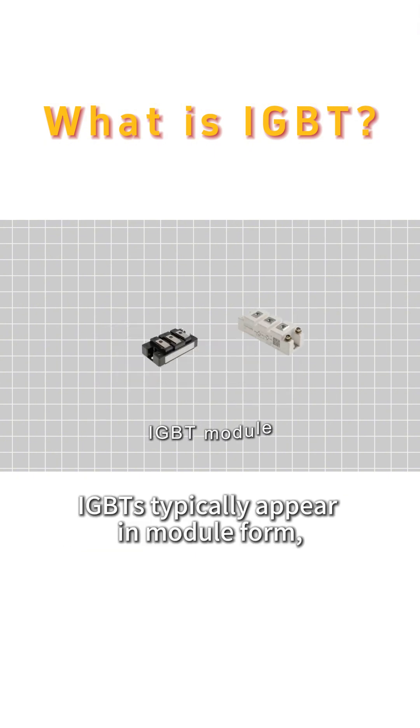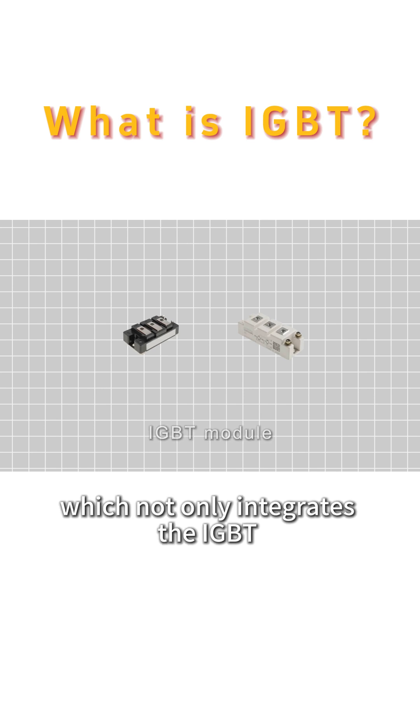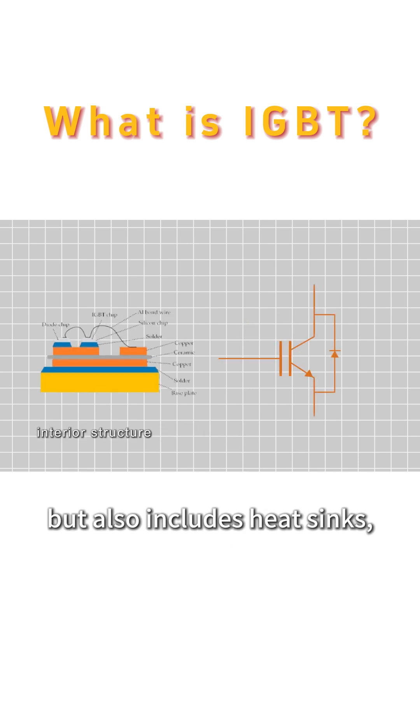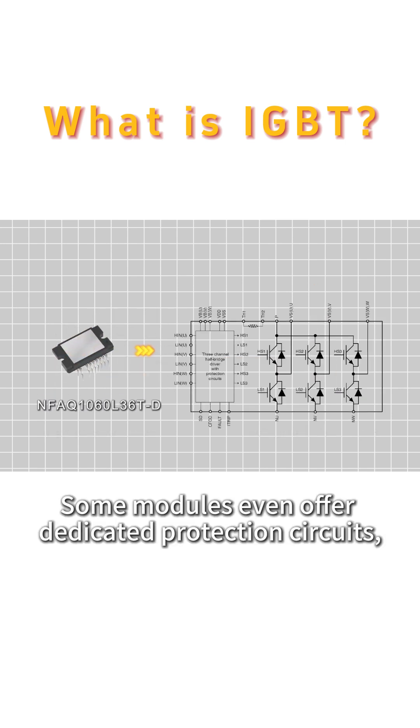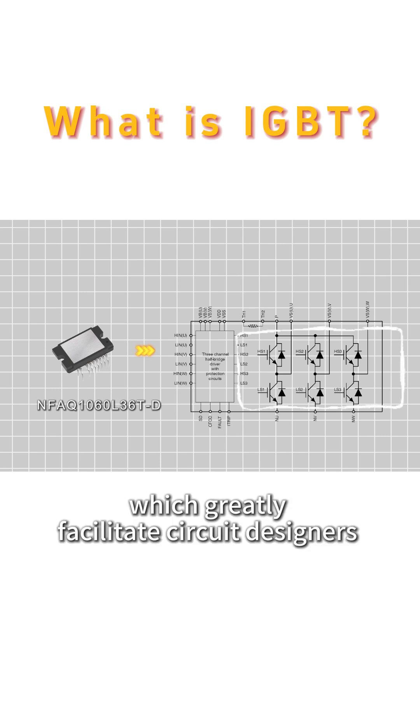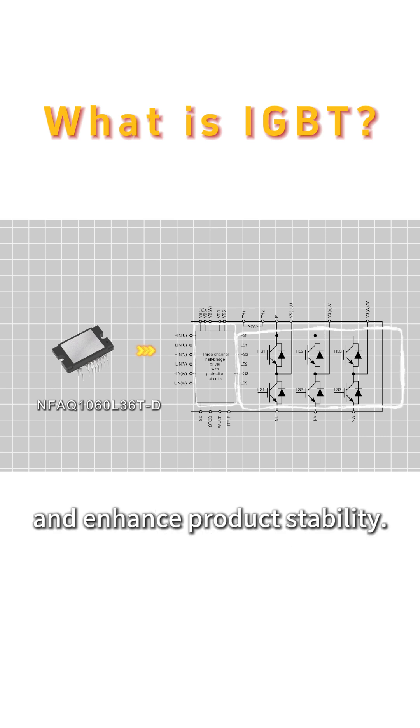IGBTs typically appear in module form, which not only integrates the IGBT but also includes heat sinks, freewheeling diodes, and sometimes multiple IGBTs in a single module. Some modules even offer dedicated protection circuits, which greatly facilitate circuit designers and enhance product stability.